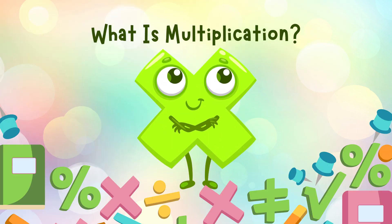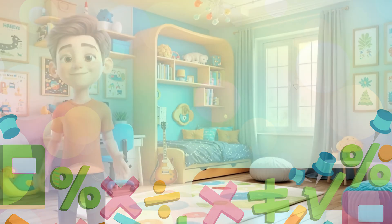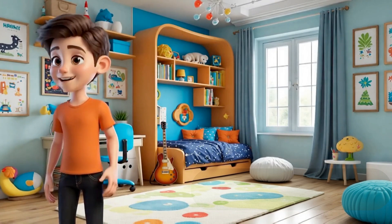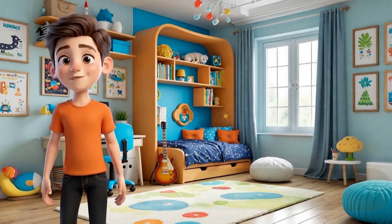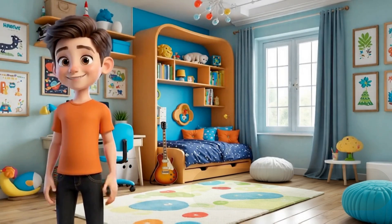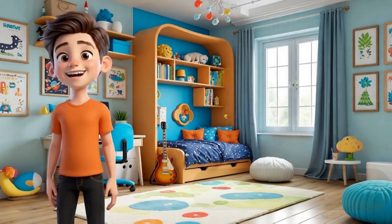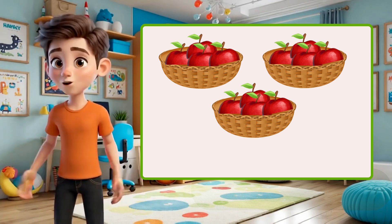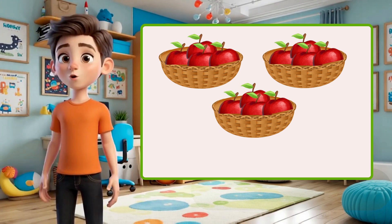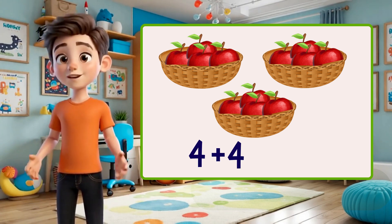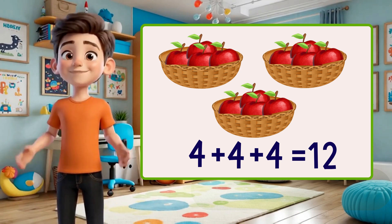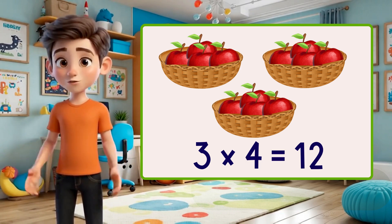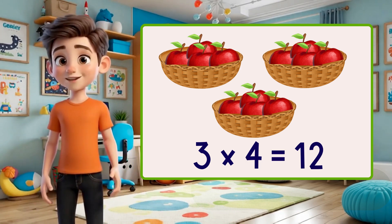What is multiplication? Multiplication is just repeated addition. That means we're adding the same number again and again. For example, if you have three baskets and each basket has four apples, that's the same as four plus four plus four equals twelve. Or we can say three times four equals twelve. Much faster, right?